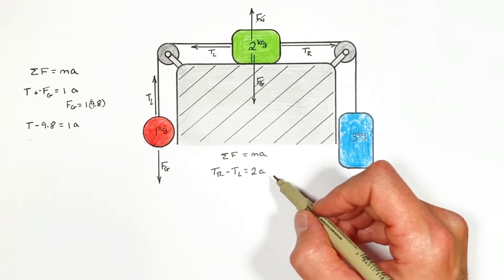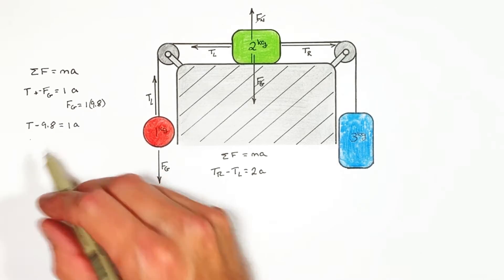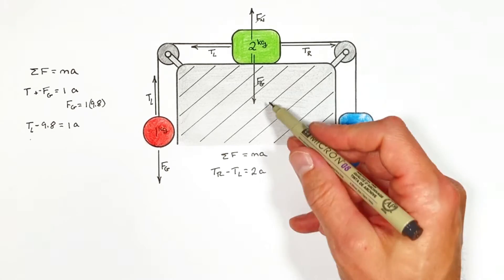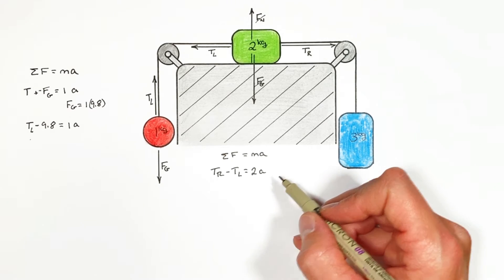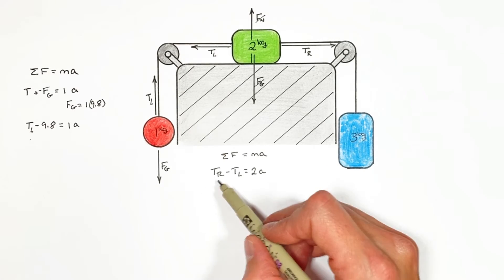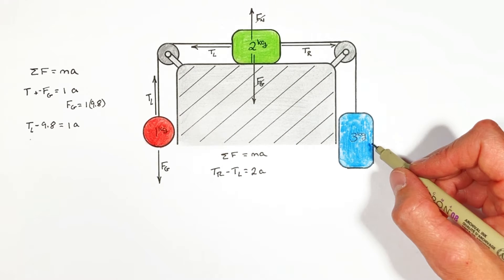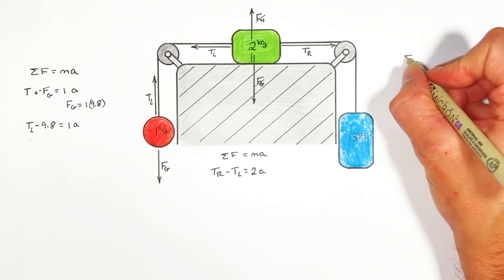Now it might seem like we're digging ourselves a little bit of a hole here. Because whereas over here we had two unknowns, again I'm going to call that TL, we had two unknowns. Now all of a sudden we've added an equation and now we have a third unknown. But kids this isn't a coincidence. We have three unknowns and we have one two three blocks. So guess what we're going to do next. We're going to apply Newton's second law to this three kilogram block right here.